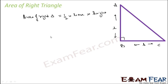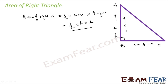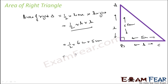If we want to write a general formula, let the base be B, so it will be 1/2 into B, and height is H — 1/2 into B into H. For example, if the height is 6 centimetres and the base is 5 centimetres, the area will be 1/2 into 6 into 5, that is 30 divided by 2, which is 15 centimetre square.